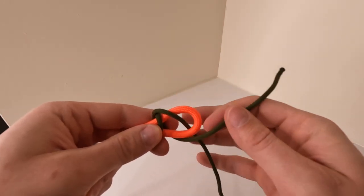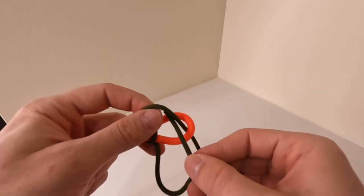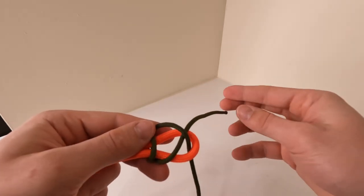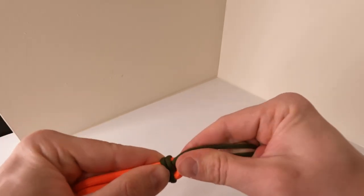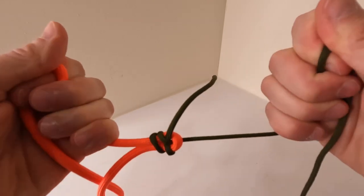Make sure that you're not going through the bite that we created with the orange rope here. As you see I go under the green rope but back over the orange as I finish the knot. Pull it tight, dress the knot and you're good to go.